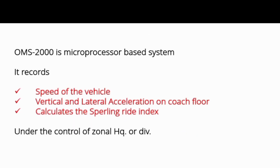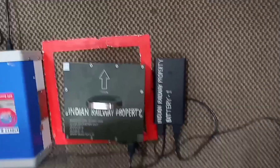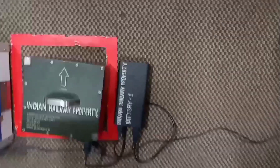The OMS inspection is under the control of the zonal headquarters. It calculates the vertical and lateral acceleration, speed of the vehicle, and ride index. The mechanical accelerations are processed by the transducers in the accelerometer.